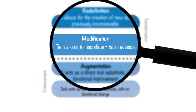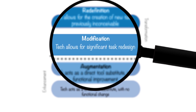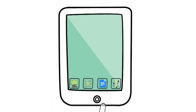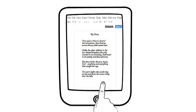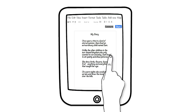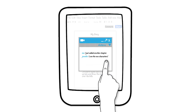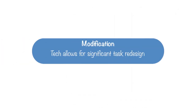In modification, technology should allow for significant task redesign. Take the same creative writing assignment and have students use Google Docs to write their stories. Students can then share these stories with peers and provide real-time feedback. Here, technology has significantly modified the original task by introducing the benefits of student collaboration.